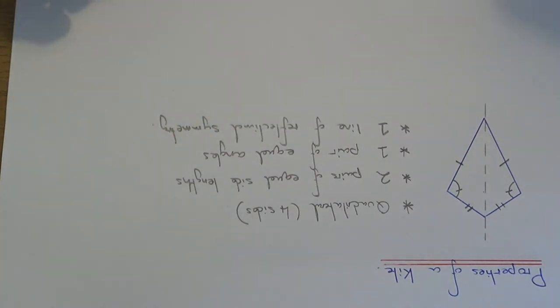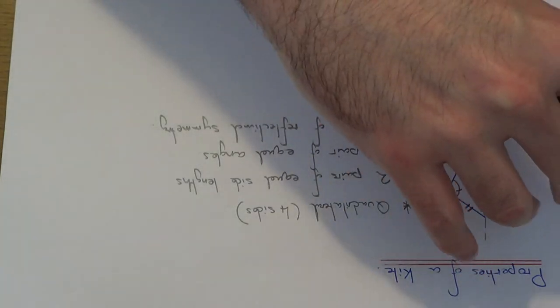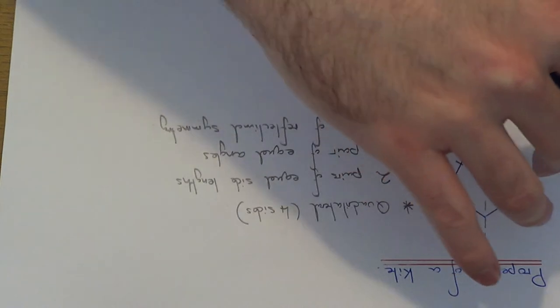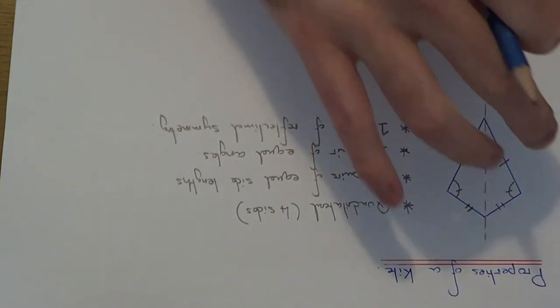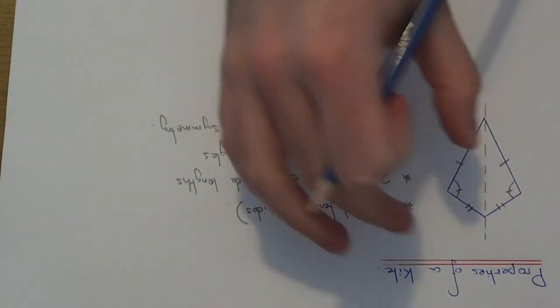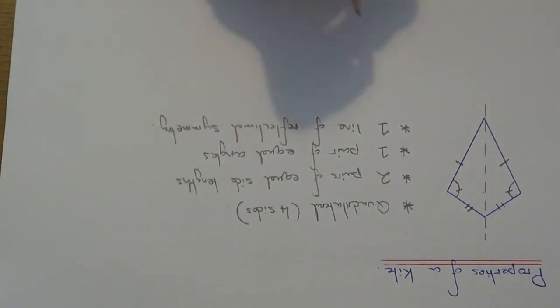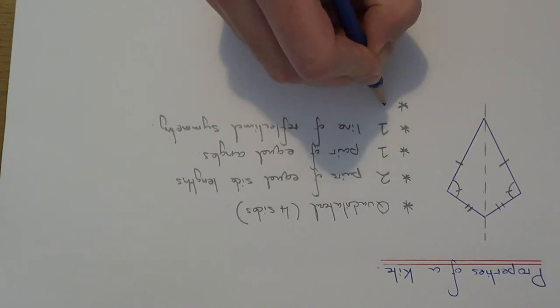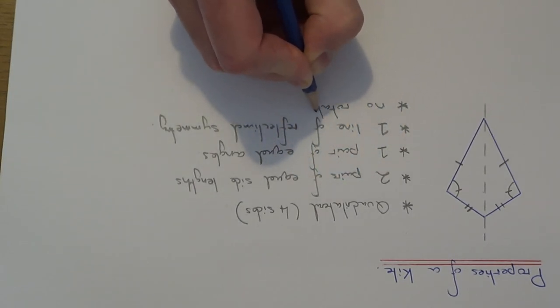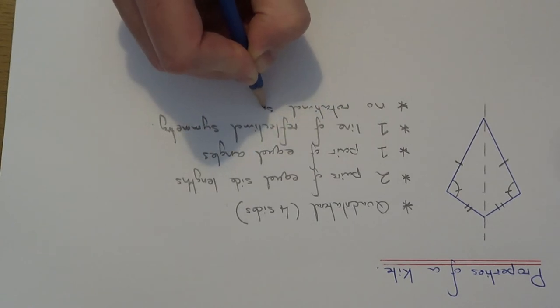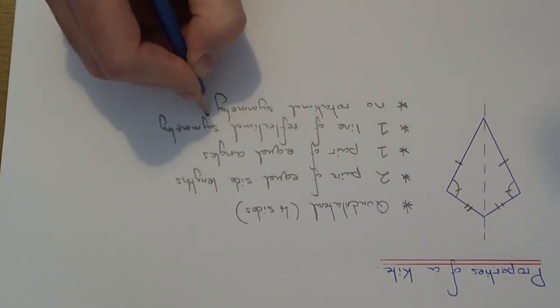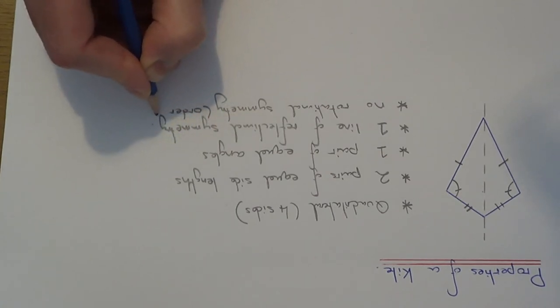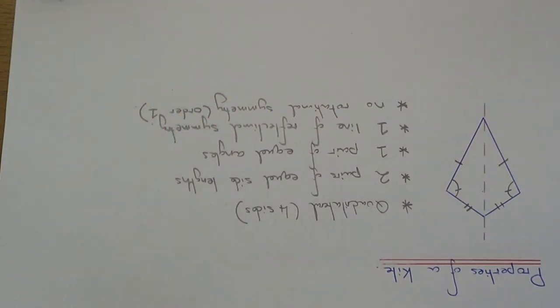Let's look at the rotational symmetry of a kite. If you get a bit of tracing paper, you'll find that you won't be able to turn it around onto itself in a full turn. So a kite wouldn't have rotational symmetry. If you want the order, this will be order one. Order one means it doesn't have rotational symmetry.